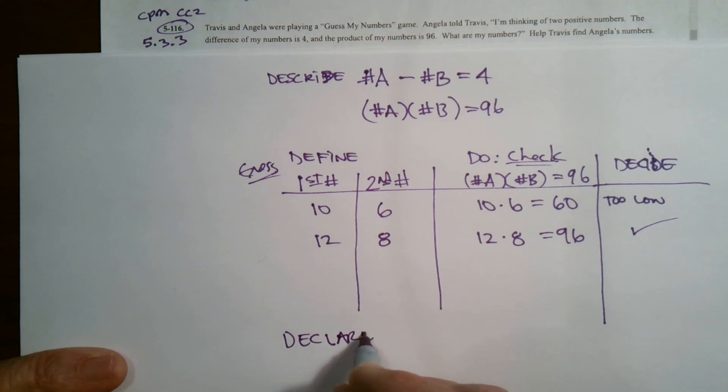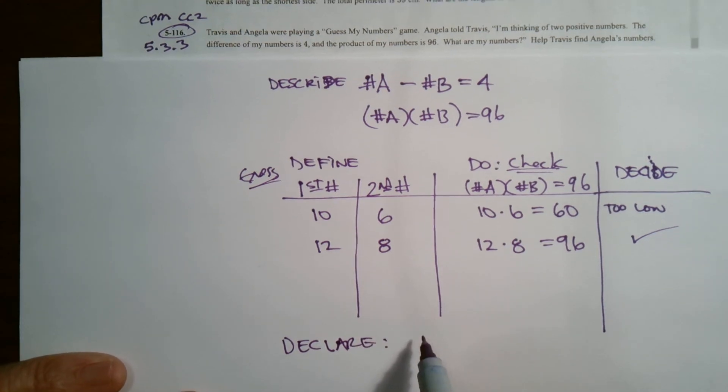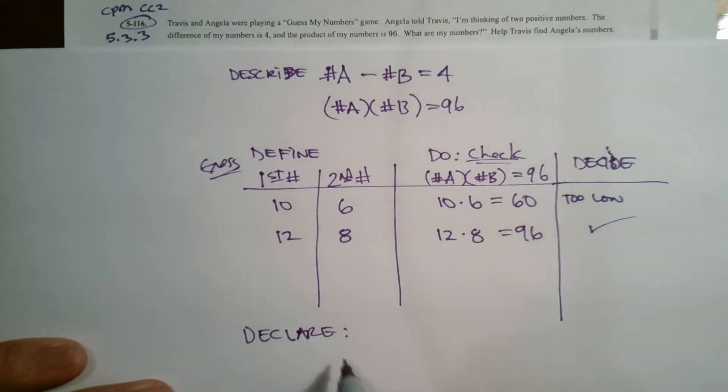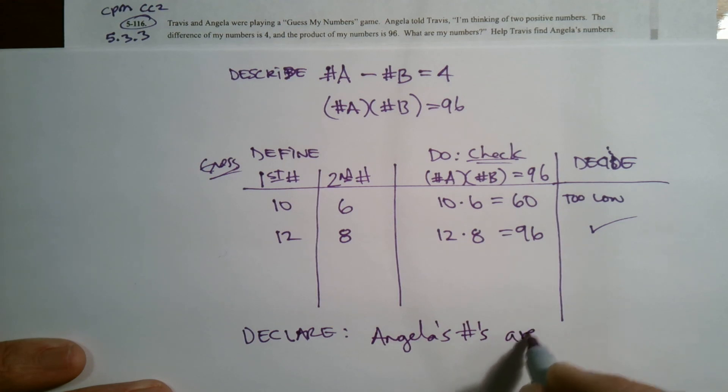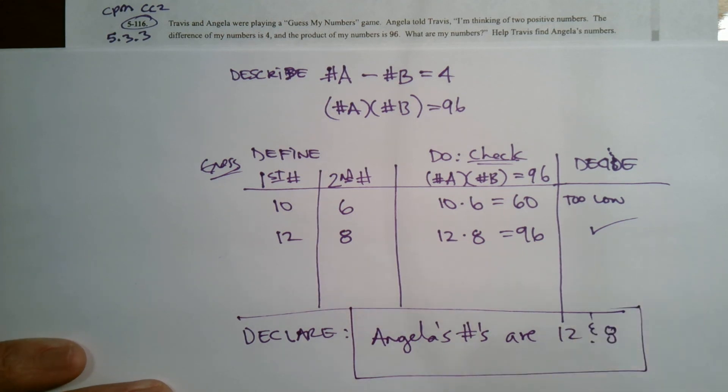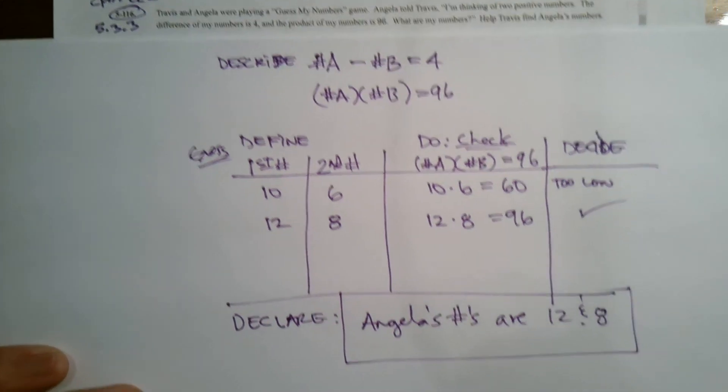What we do is we declare the answer. So they wanted us to find Angela's numbers. So we can say the declare is Angela's numbers are 12 and 8. And that right there would be the answer. There you go.